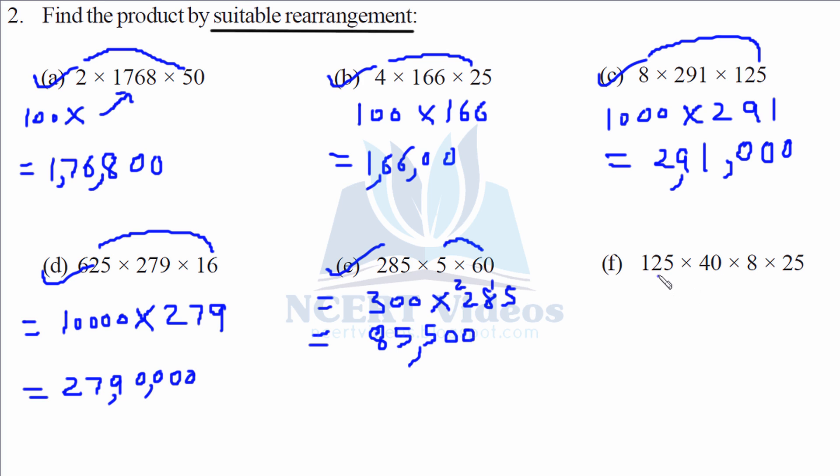Here we will arrange in such a manner as shown. 125 into 8 is nothing but 1000. So we will write 1000. And again, 40 into 25 is again 1000. Do it this way: 25 into 4 is 100, and one zero, so it becomes 1000. So again, adding six zeros now. It gives you 10 lakhs. That is your question number 2.